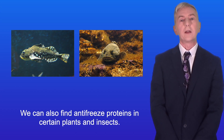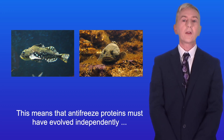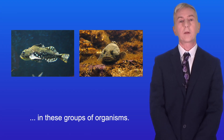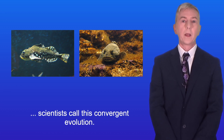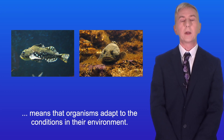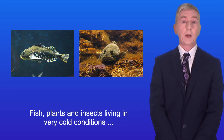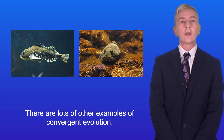We can also find antifreeze proteins in certain plants and insects. Fish, plants and insects do not share any recent common ancestor, so antifreeze proteins must have evolved independently in these groups of organisms. When unrelated organisms evolve common features like this, scientists call this convergent evolution. Evolution by natural selection means that organisms adapt to the conditions in their environment, so fish, plants and insects living in very cold conditions have adapted by independently evolving antifreeze proteins.